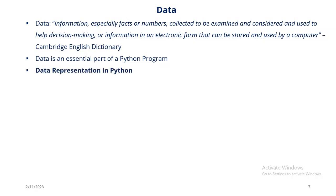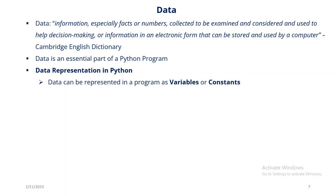How do we represent data in Python? It can be represented as variables or constants. I must state now that Python does not have a concept of constants, but as a computer programmer you should know about constants. There is a way that Python programmers represent constants. The data types in Python include: string, numeric, boolean, list, tuple, set, and dictionary.